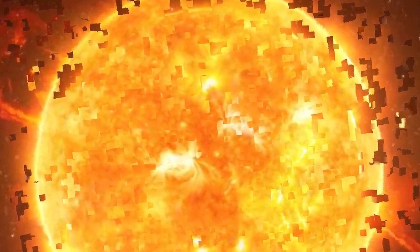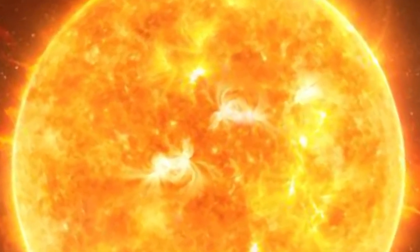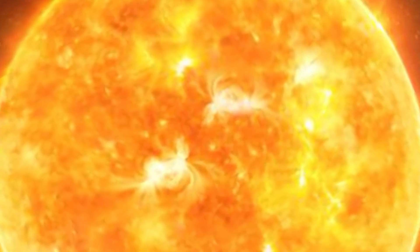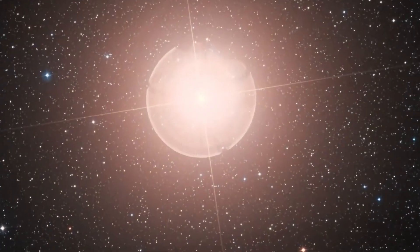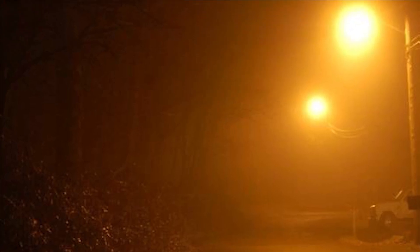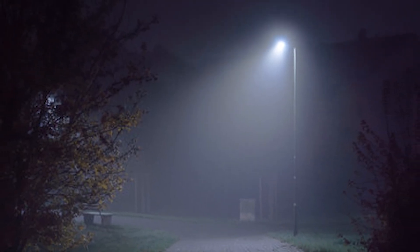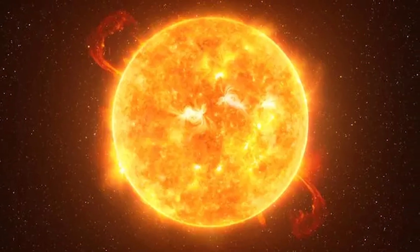This dust then moved in front of the star, blocking some of its light from reaching Earth. To us, it looked like the star had dimmed significantly. But in reality, the star itself was still shining as brightly as before. It was just hidden behind this cloud of dust. Imagine if you were looking at a street lamp through a thick fog. The street lamp is still just as bright, but the fog makes it look much dimmer. This is similar to what happened with Betelgeuse.